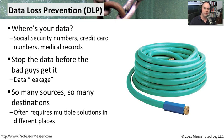You have information that is on hard drives and stored in databases. This information is flowing across the network. Some of it may be on your desktop. This data is in so many different places, moving in so many different ways, that data loss prevention is truly a very broad concept — we have to prevent that data from getting out in each one of those different areas.